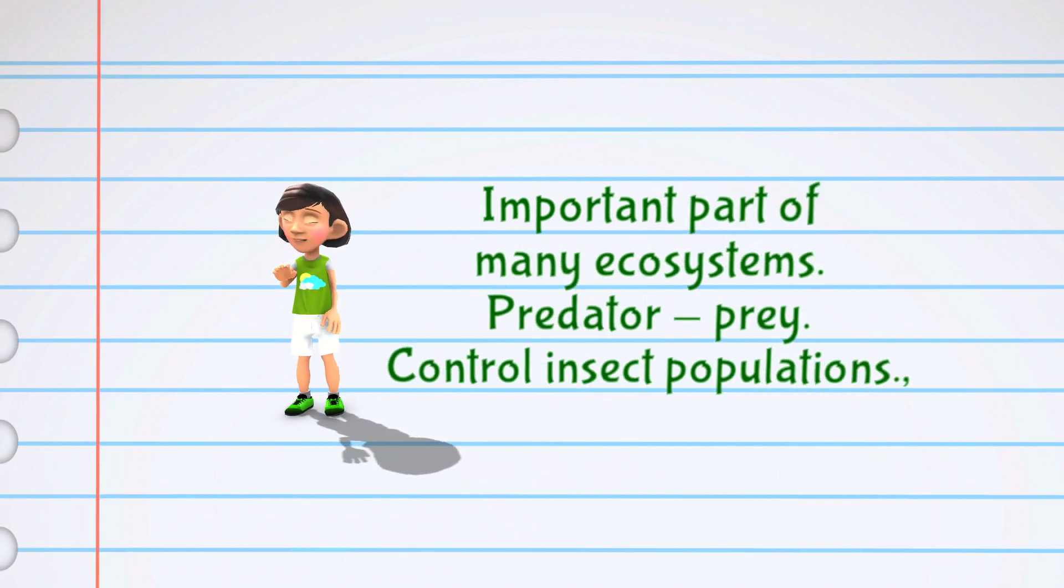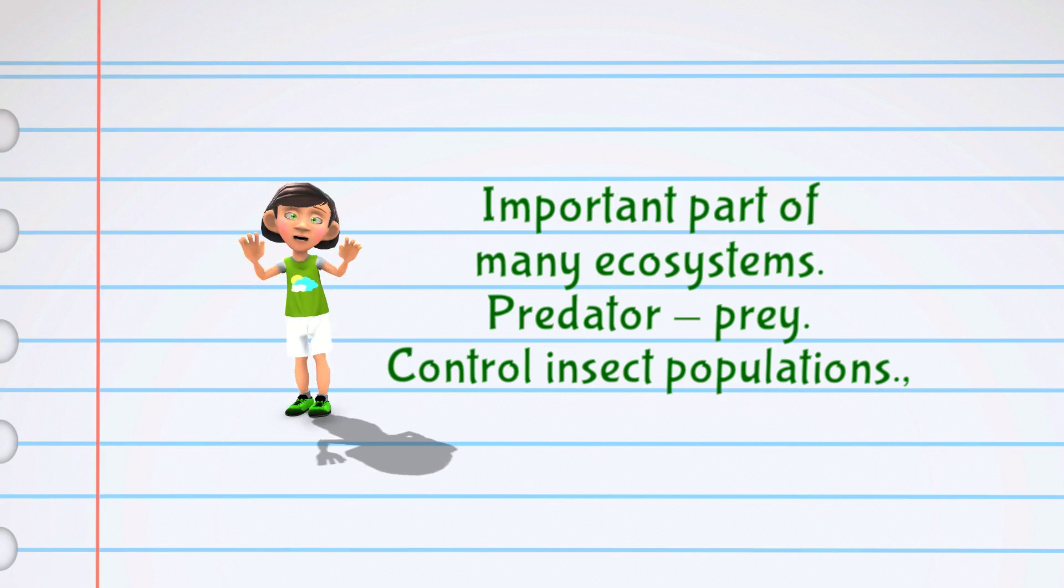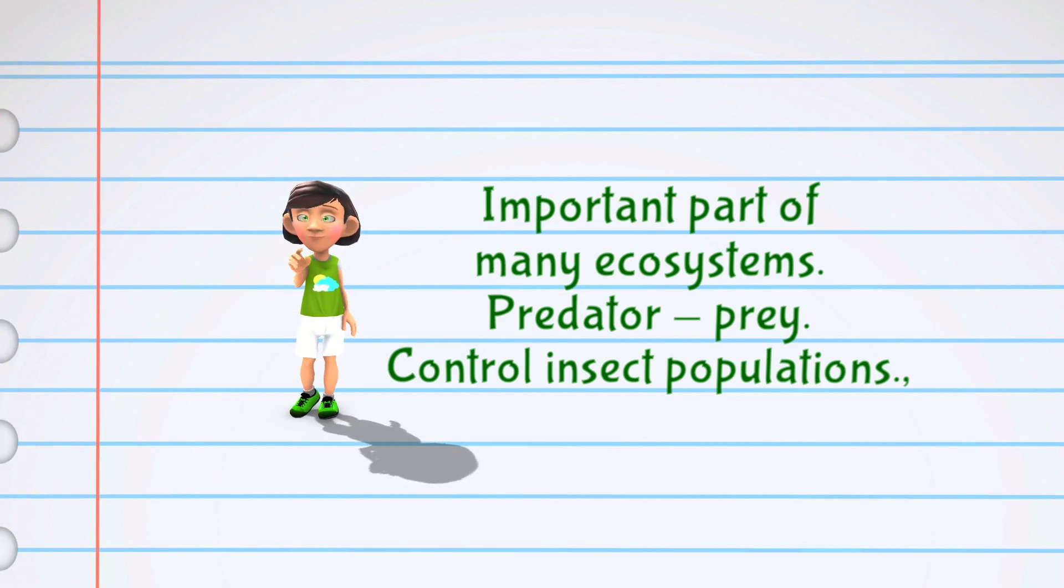Amphibians are an important part of many ecosystems, serving as both predator and prey. They also help control insect populations and are studied by scientists to better understand their unique adaptations.